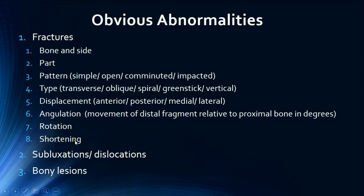When we see a fracture, it's very important to have certain descriptive terms. First, describe the bone involved and the side — for example, is it the left humerus or the right femur? The second thing is the part of the bone involved: is it the distal third, the mid-shaft, the distal one-third, etc.? Then we look at the pattern of the fracture, which is assessed clinically by checking whether the overlying skin is intact or not.